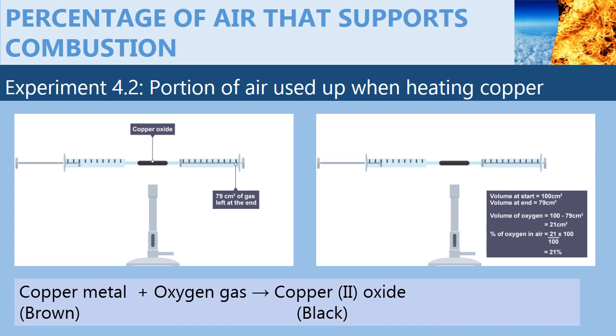In this setup, we usually add glass wool in between the syringe and the combustion tube to stop copper turnings from being sucked into the syringes. And the air is also passed repeatedly and very slowly to ensure that a larger percentage of air reacts with copper.